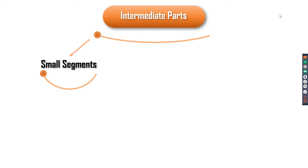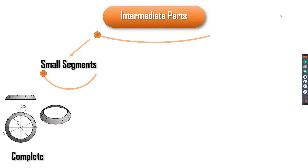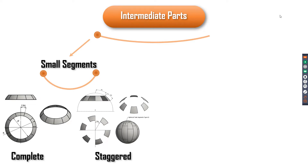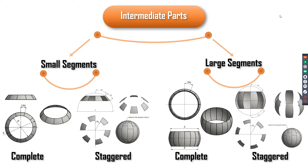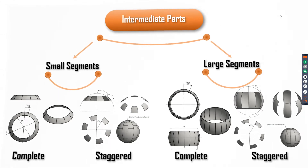For the intermediate parts, we can divide them into small segments with two main types: the first is the complete number of segments, and the second is the staggered number of segments as shown in the second image. The second type for intermediate parts is large segments — these can also have a complete or staggered number of segments. The difference is that large segments cross the center line of the spherical tank, with part above and part below the center line.